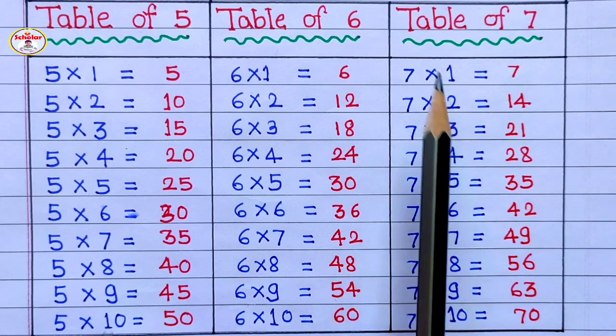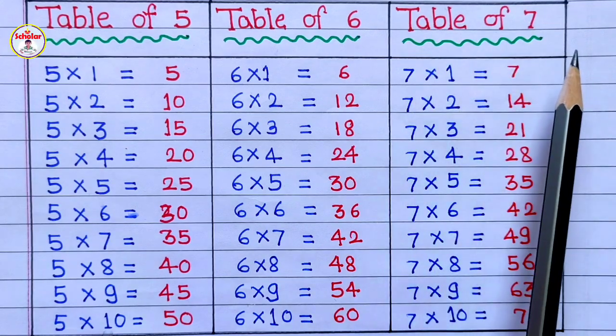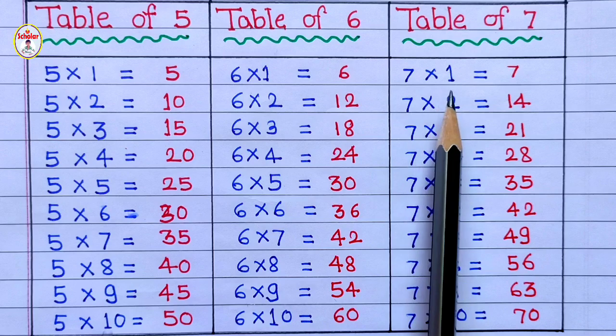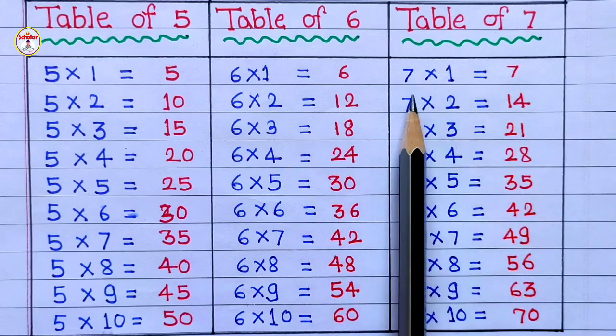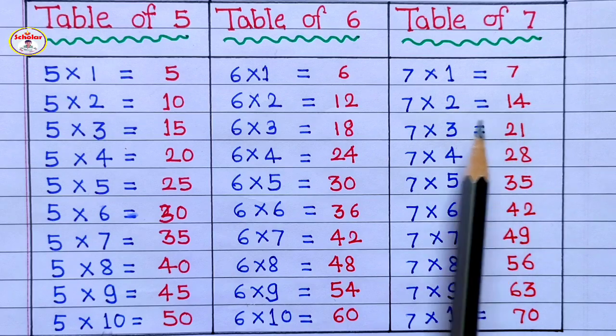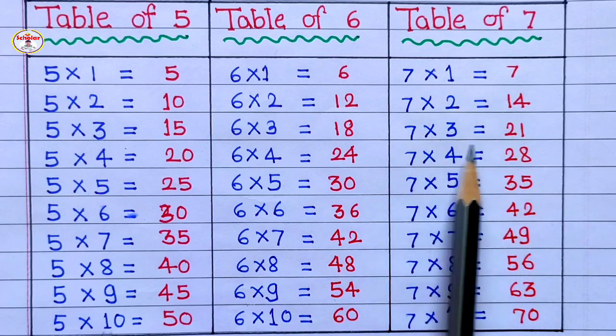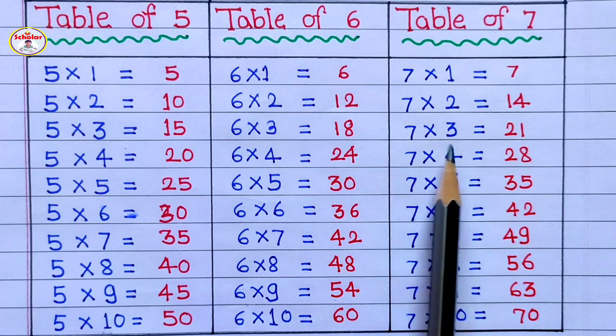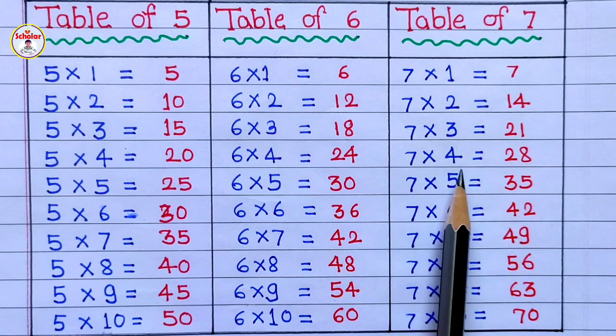Table of 7: 7 1's are 7, 7 2's are 14, 7 3's are 21, 7 4's are 28.